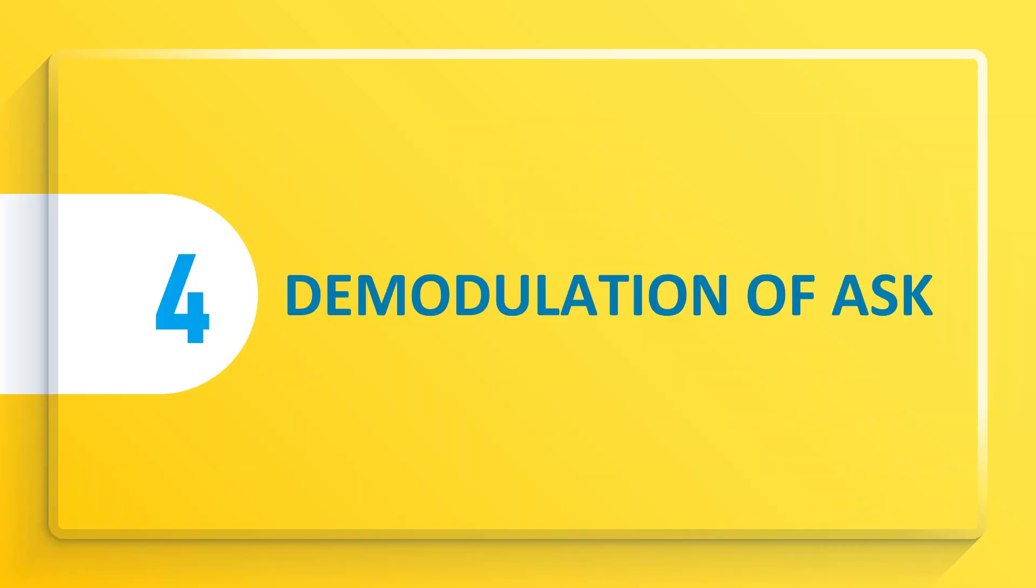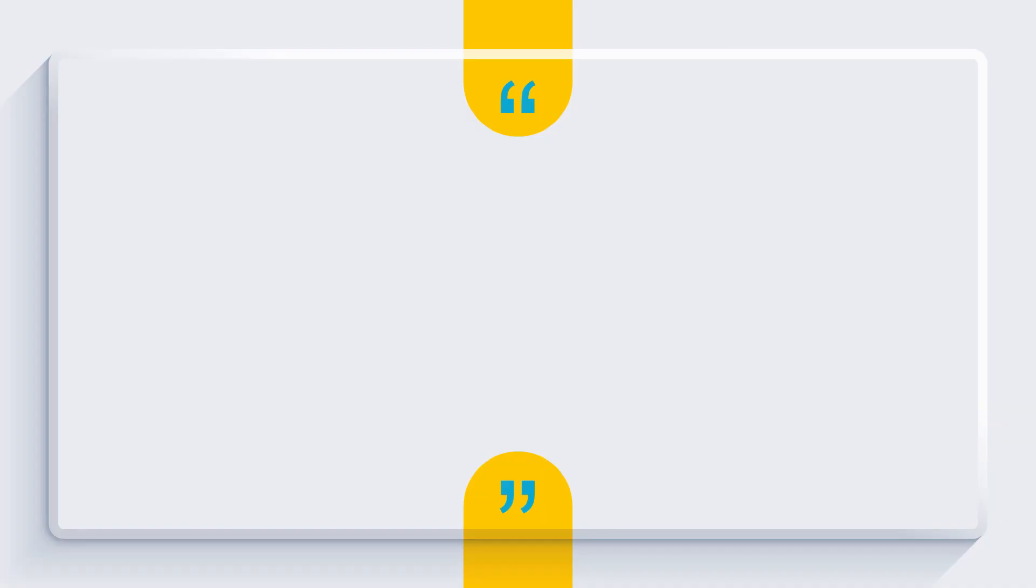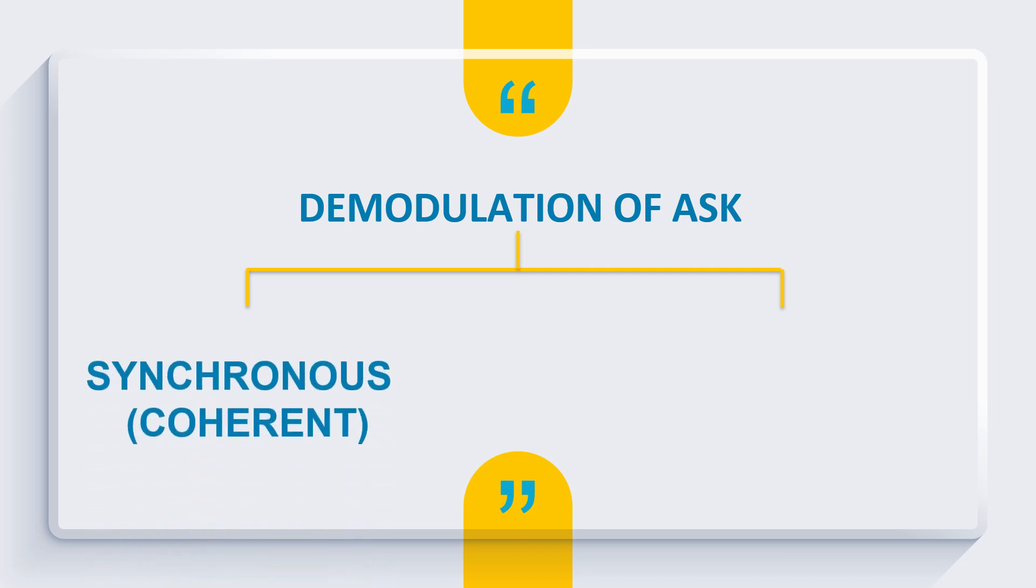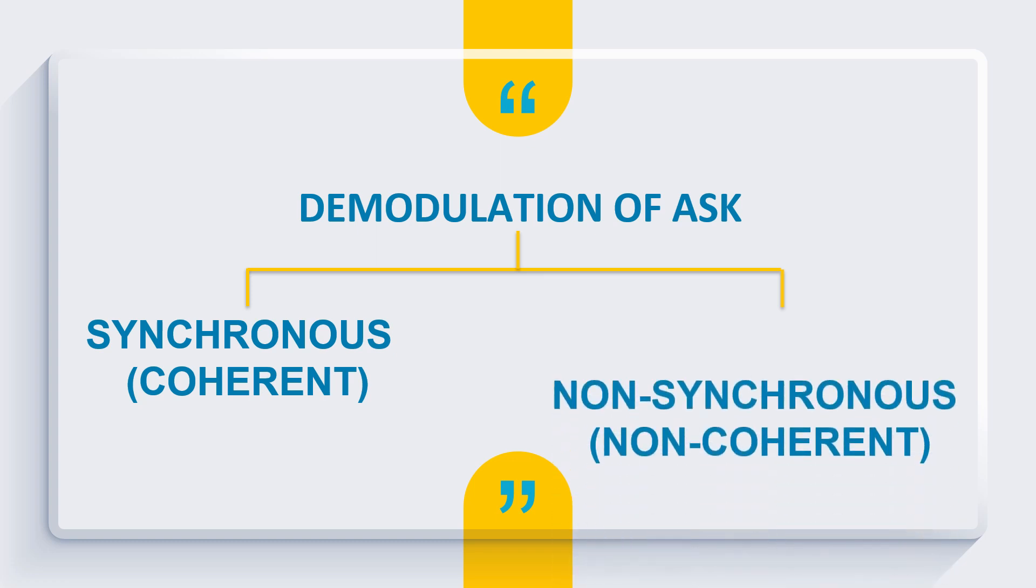Then, next to our fourth part, the demodulation of ASK signal. The demodulation can be categorized into two methods. One is the synchronous method, and synchronous means coherent. And the second one is non-synchronous method, which means non-coherent.